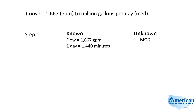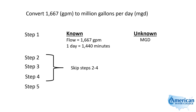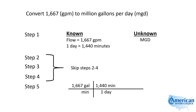Now that we know that one day is 1,440 minutes, we can go ahead and continue with our unit conversion. Step five is where we convert units. So we're going to enter our 1,667 gallons per minute. Notice how I separated the gallons and the minutes — gallons per minute. Then we use our equivalent of 1 day is 1,440 minutes, and that causes our minutes to divide out. So right now we have gallons per day.